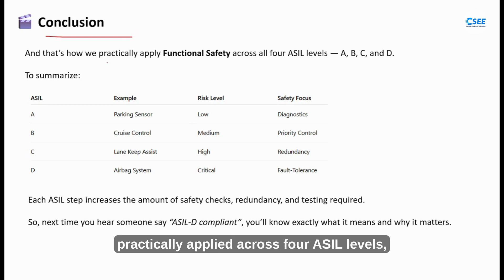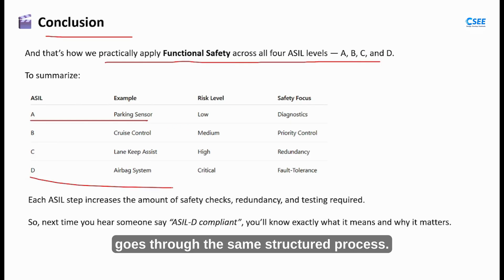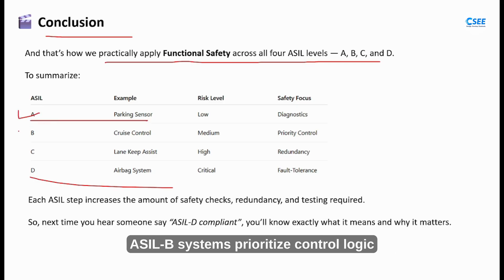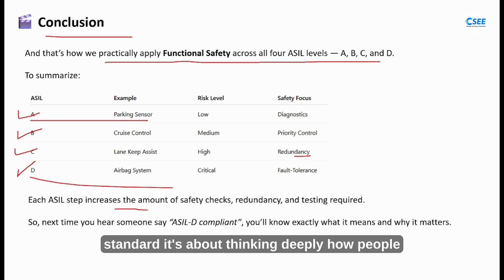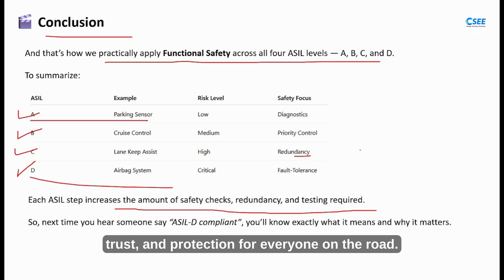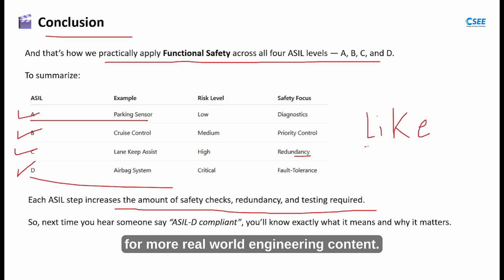Conclusion. That's how functional safety is practically applied across four ASIL levels, from A to D. Each system — whether a parking sensor or an airbag ECU — goes through the same structured process, but the intensity and rigor increase as the risk grows. ASIL A systems focus on simple diagnostics. ASIL B systems prioritize control logic and verification. ASIL C systems demand redundancy and fault tolerance. And ASIL D systems require full-scale safety architecture and fail-safe operation. In summary, functional safety is not just about following a standard — it's about thinking deeply about how people could be harmed if a system fails, and designing everything to make sure that never happens. It's a mindset that ensures reliability, trust and protection for everyone on the road. If you found this explanation useful, hit the like button, share it with your automotive friends and subscribe for more real-world engineering content. Thank you for watching.